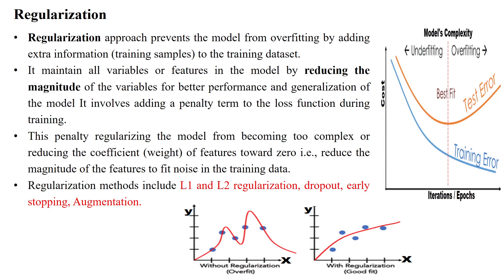Regularization is one of the methods used to prevent the model from overfitting by adding extra information — that is, training samples or extra features into the training dataset. It maintains all the features or variables in the model by reducing the magnitude of the variables for improving the performance of the training process.